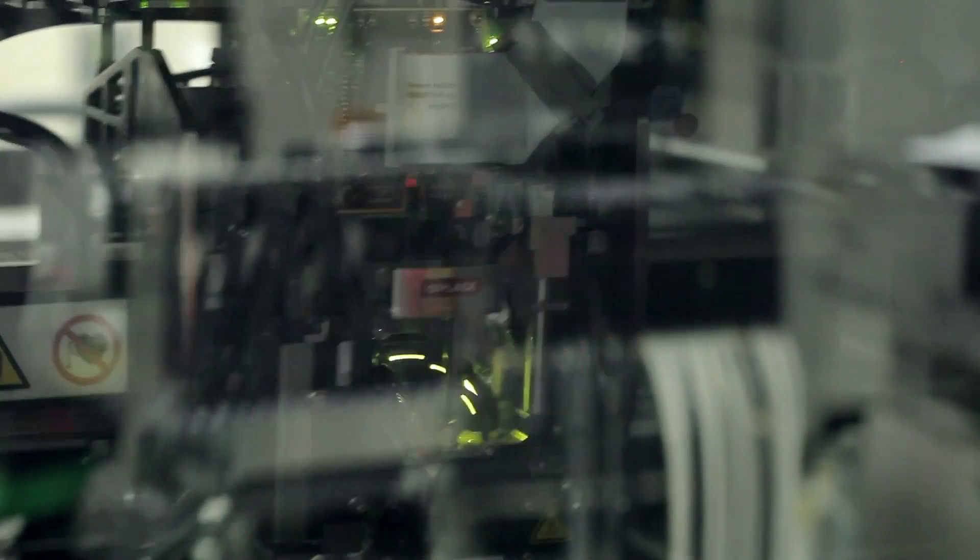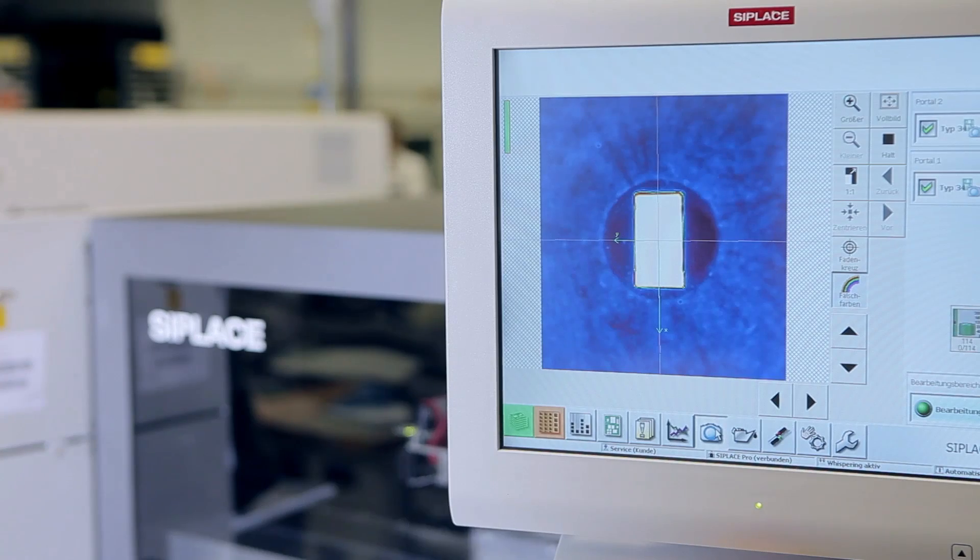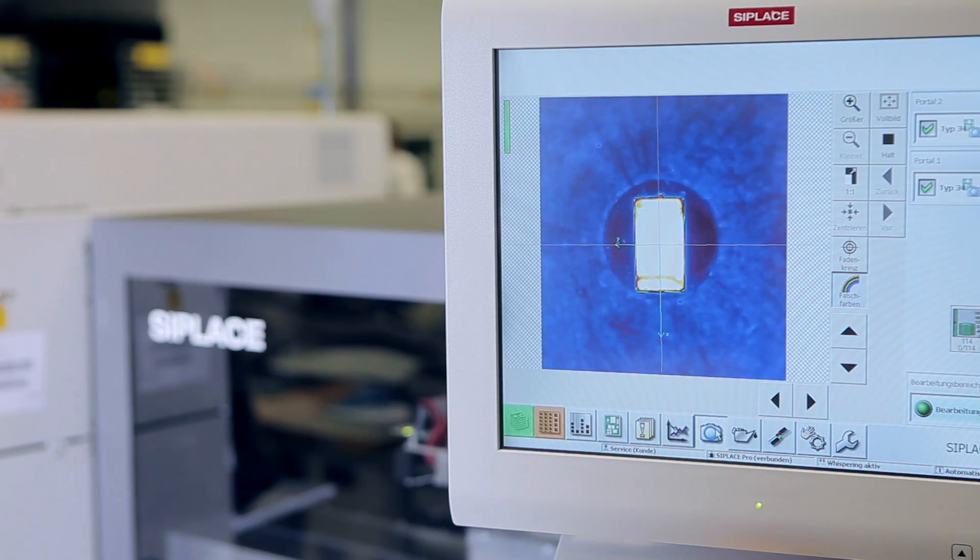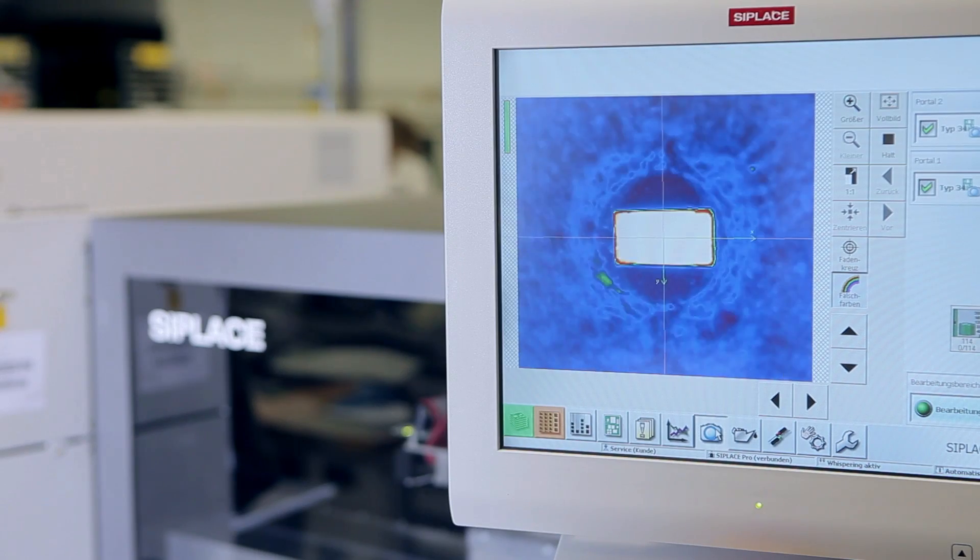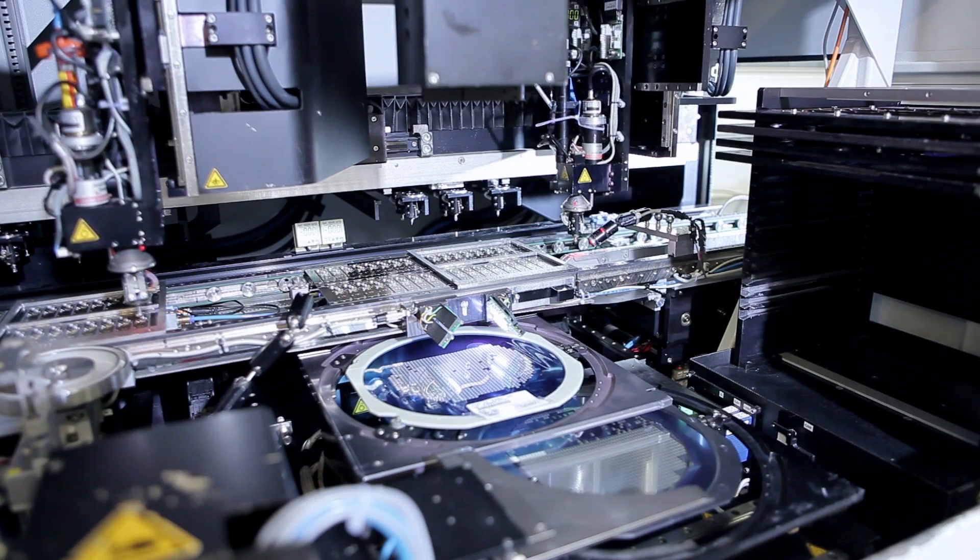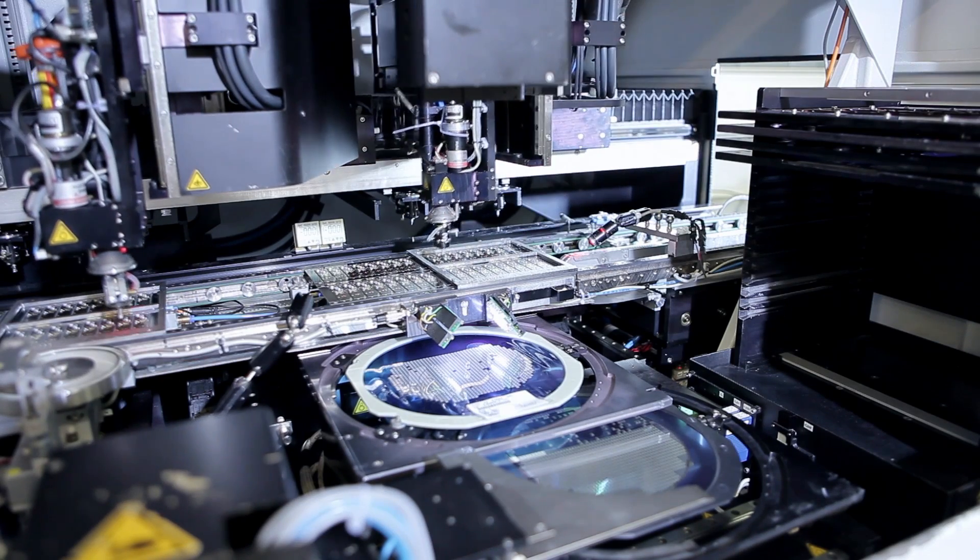SMD placement plays an essential role here. A vacuum placement head positions the electronic components at high speed with maximum precision. The three-part bonding process completes the miniaturization.